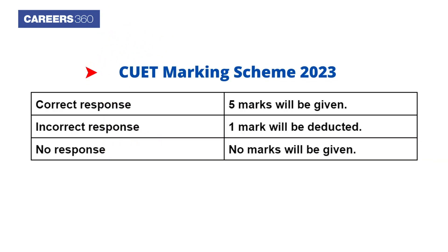CUET marking scheme 2023: Students will receive five marks for each correct answer. For each incorrect response, one mark will be deducted. NTA will deduct no marks for unanswered or unmarked responses.